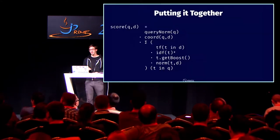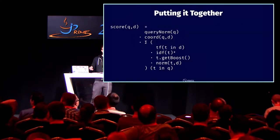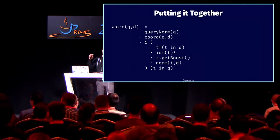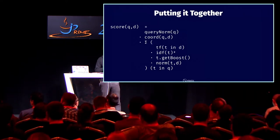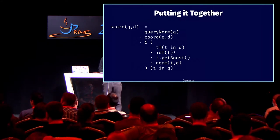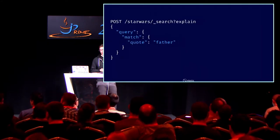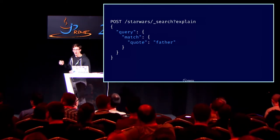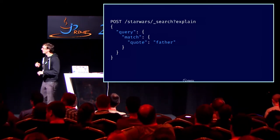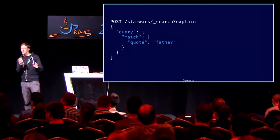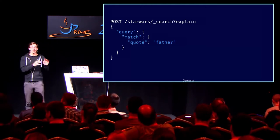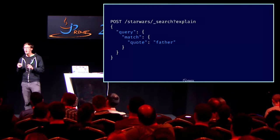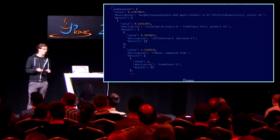Then you can combine everything. You can see we have boosting where you can say this field is more important than another field. That is the formula for how you combine all of that together once you've calculated each one. So let's assume we want to search for 'father' — we have this '?explain' query parameter. I don't really understand why I'm getting the result for that, and '?explain' will actually show you how it is calculated behind the scenes.